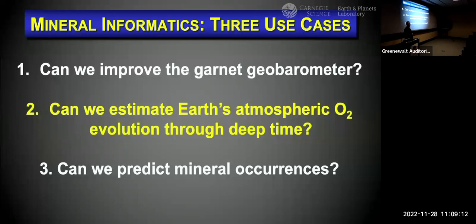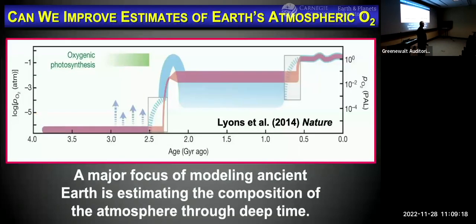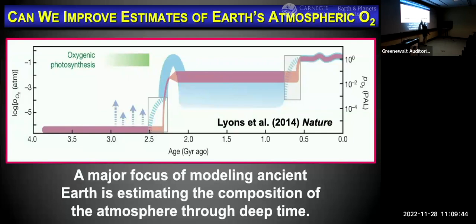The second use case is trying to predict atmospheric oxygen through four and a half billion years of Earth history. This is a major concern in astrobiology and geobiology. Here, for example, is Tim Lyons' 2014 summary of atmospheric oxygenation over the last four billion years: very low before about three billion years, perhaps whiffs of oxygen between three and 2.5 billion years, the Great Oxygenation Event from 2.5 to 2.2 billion years, then a long period not well constrained, followed by the Neoproterozoic Oxygenation Event, and the last 500 million years with oxygen more or less at the present level but with significant fluctuations.